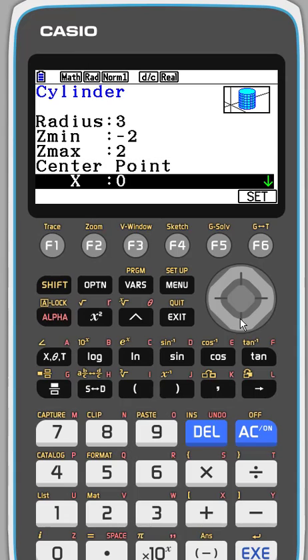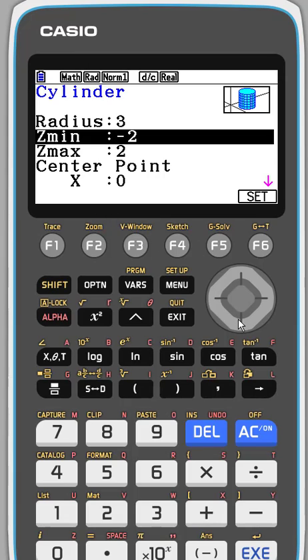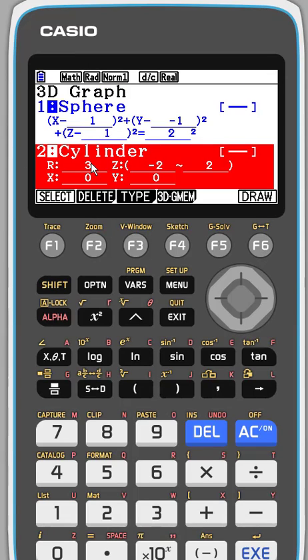And again, you can play around with these. And I want my cylinder to be centered at zero, zero. So that's where this last thing is. Okay, so everything's good. So I'm going to hit set here, F6. And now you see I have a second equation in here.